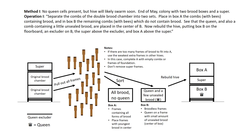Method 1. No queen cells present, but hive will likely swarm soon. End of May, colony with two brood boxes and a super. Operation 1. Separate the combs of the double brood chamber into two sets. Place in Box A the combs with bees containing brood, and in Box B the remaining combs with bees which do not contain brood. See that the queen, and also a comb containing a little unsealed brood, are placed in the center of B.